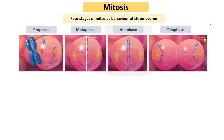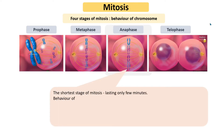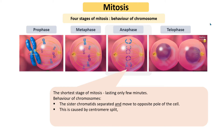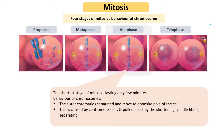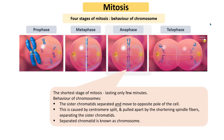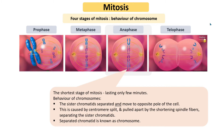In anaphase, which is the shortest stage of mitosis, lasting only a few minutes, the sister chromatids separate and move to opposite poles of the cell. This is caused by the centromere splitting and being pulled apart by the shortening spindle fibers. Each separated chromatid is then known as a chromosome.